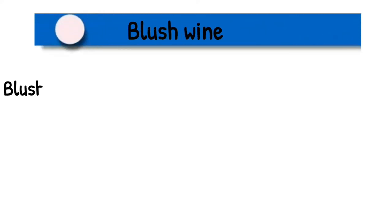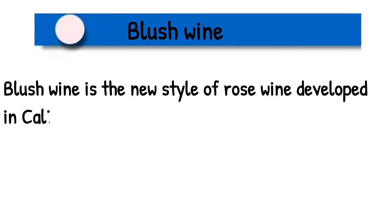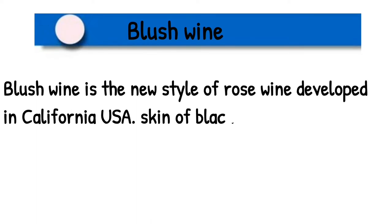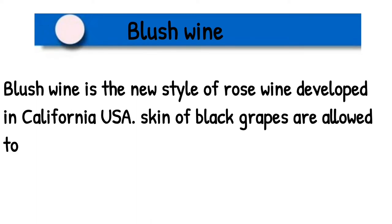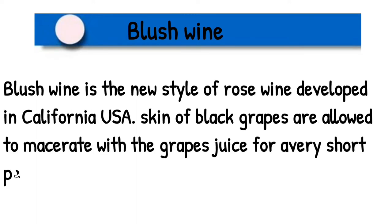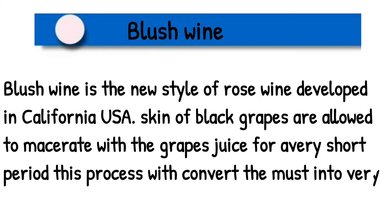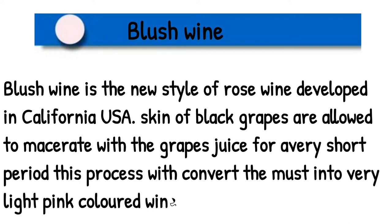Blush wine: Blush wine is a new style of rosé wine developed in California, USA. The skin of black grapes is allowed to macerate with the grape juice for a very short period. This process converts the must into a very light pink colored wine.